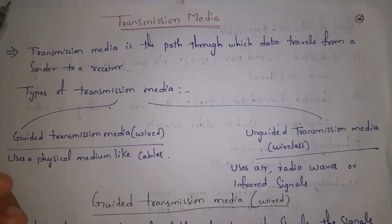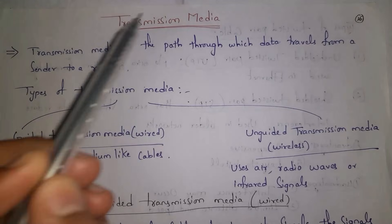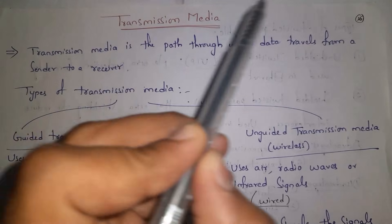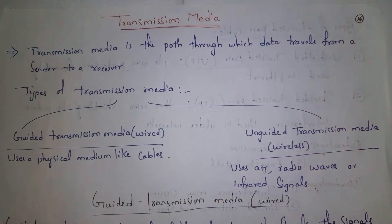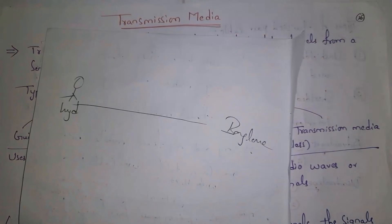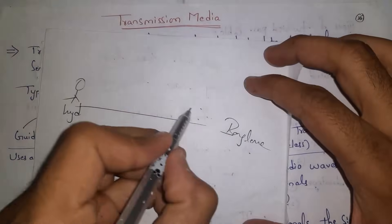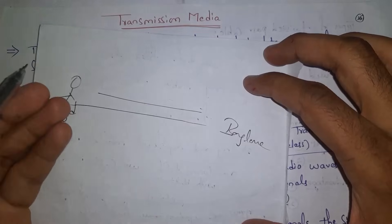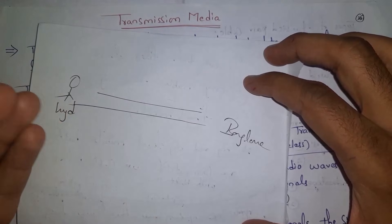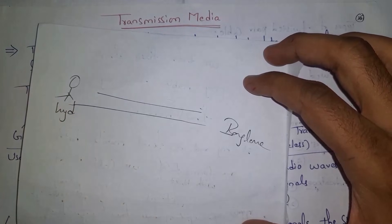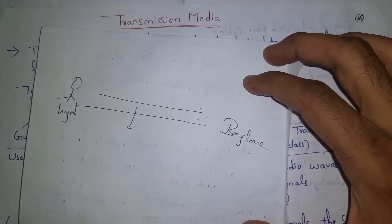Transmission media is the path through which data travels from a sender to a receiver. For example, if I want to travel from Hyderabad to Bangalore, I need a path — a road — and by using my vehicle I will travel from Hyderabad to Bangalore. So a road is considered as a path.